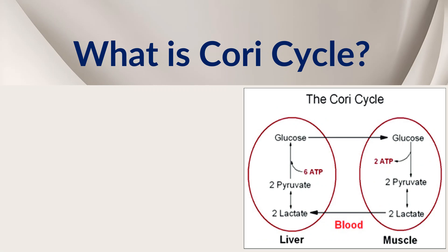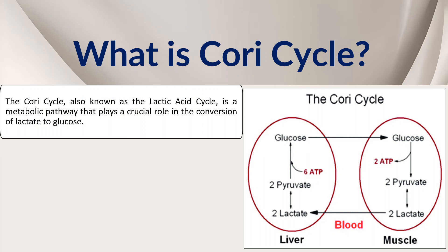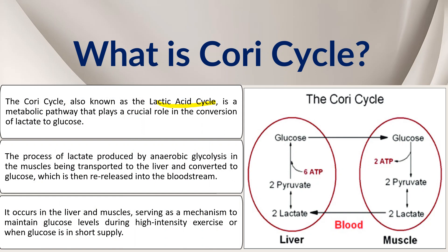This cycle allows the body to maintain energy levels during periods of high energy demand. It involves the interconversion of lactic acid and pyruvic acid between the muscle and the liver. During intense physical activity, lactic acid is produced by anaerobic glycolysis in the muscles whenever oxygen is insufficient.